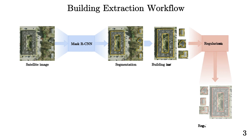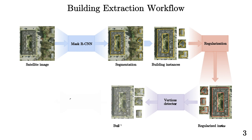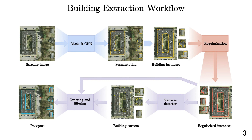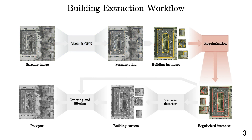The pipeline is composed of three independent modules. First, an instance segmentation network performs the initial building segmentation. In order to produce more realistic footprints, we further refine each instance exploiting a convolutional neural network trained using a combination of adversarial, reconstruction, and regularized losses.